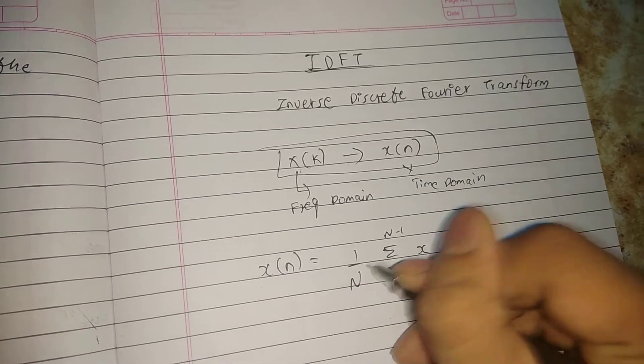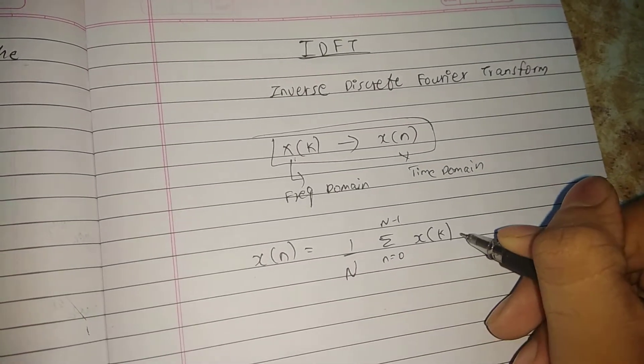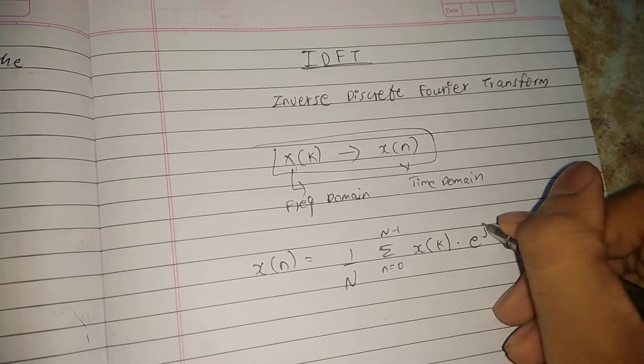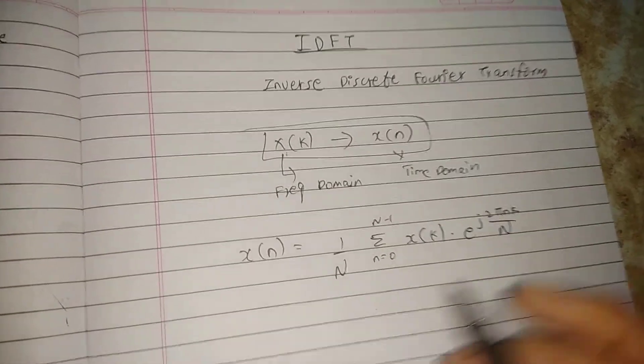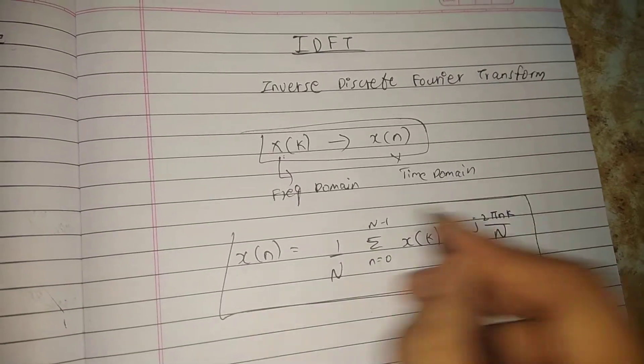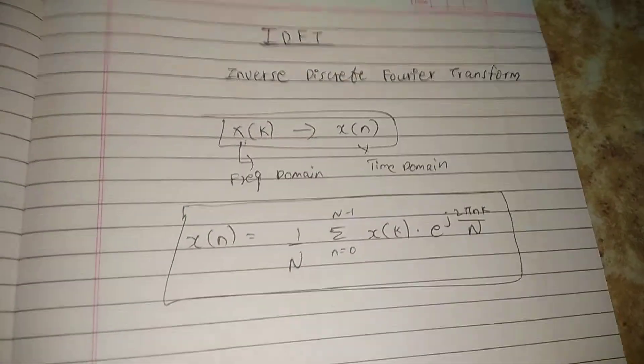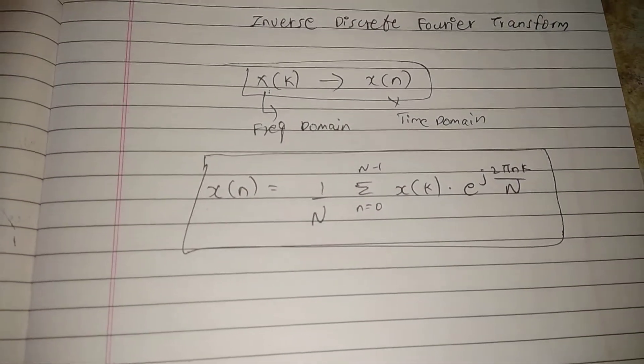x(k) into e raised to j 2 pi nk upon N. This is the formula to calculate the inverse discrete Fourier transform.